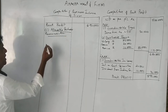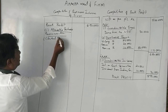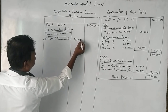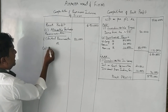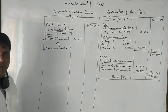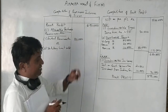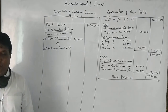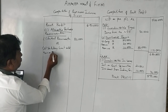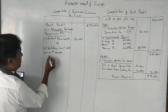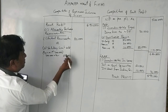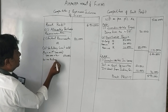To find partners' allowable remuneration, first we take the actual remuneration paid, which is 80,000 rupees. We then compare this with the statutory limit under Section 40B. Since the book profit is more than 3 lakh rupees, we apply the SLAP: 90% on the first 3 lakh rupees, which gives 2,70,000 rupees, plus 60% on the balance book profit.